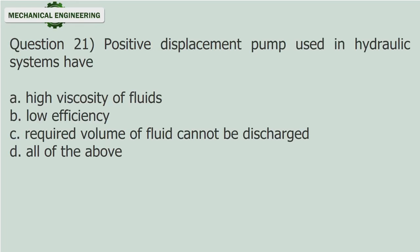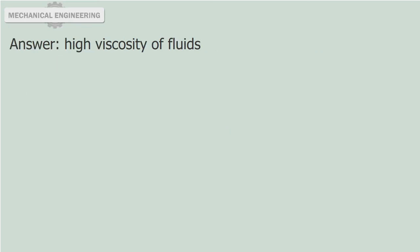Question 21: Positive displacement pumps used in hydraulic systems have: A. High viscosity of fluids. B. Low efficiency. C. Required volume of fluid cannot be discharged. D. All of the above. Answer: High viscosity fluids.